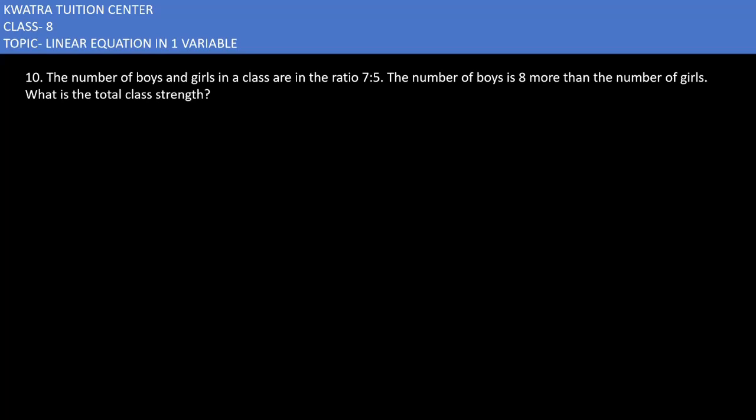Now moving to the 10th one, it says the number of boys and girls in a class are in the ratio 7:5. The number of boys is eight more than the number of girls. What is the total class strength?